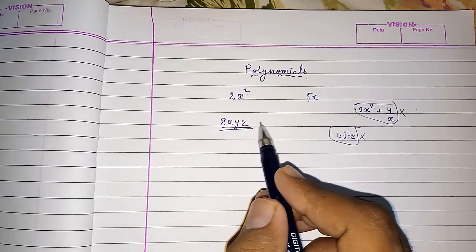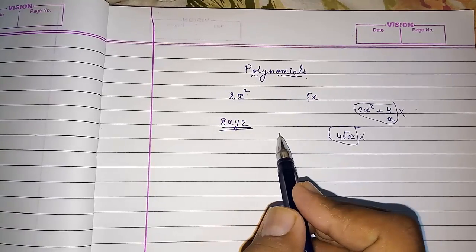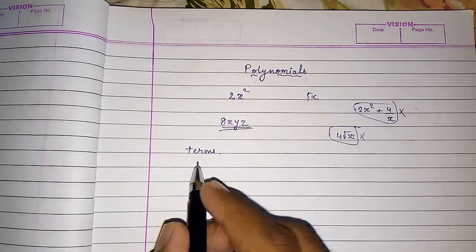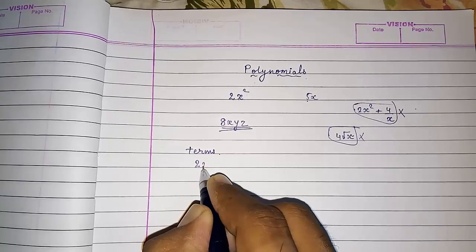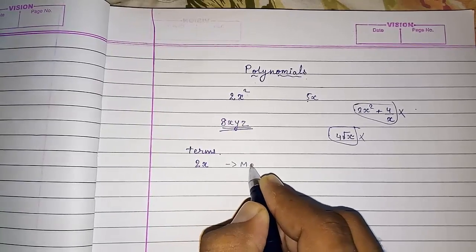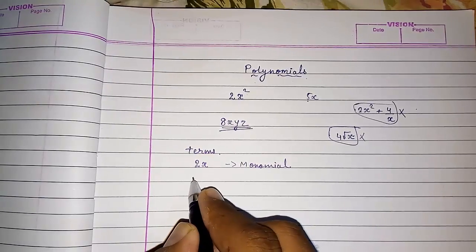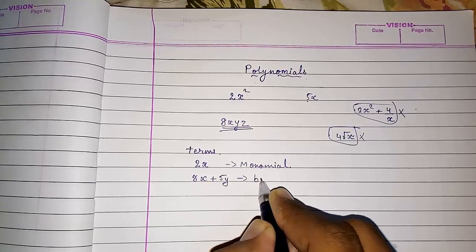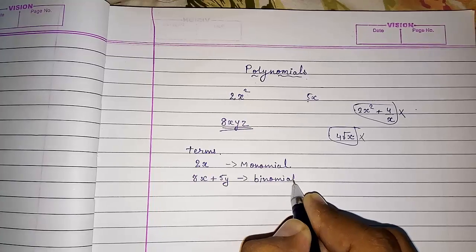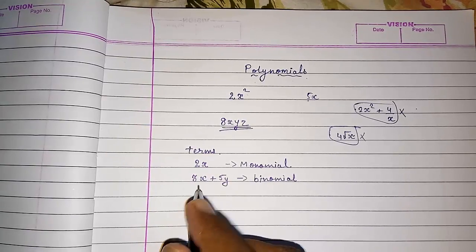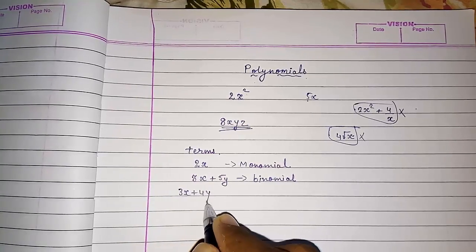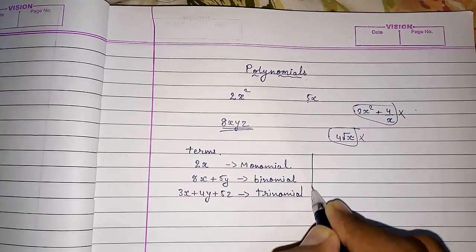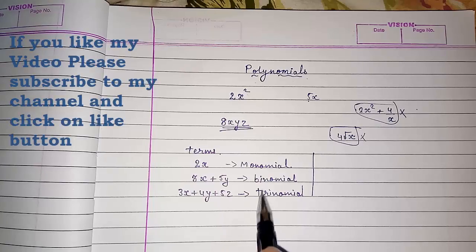Now we are going to study the different names given to polynomials according to their terms. If a polynomial has one term, it is called a monomial. If a polynomial has two terms, it is called a binomial. If a polynomial has three terms — for example, 3x plus 4y plus y — it is called a trinomial.